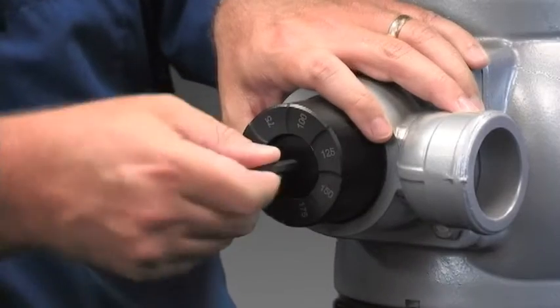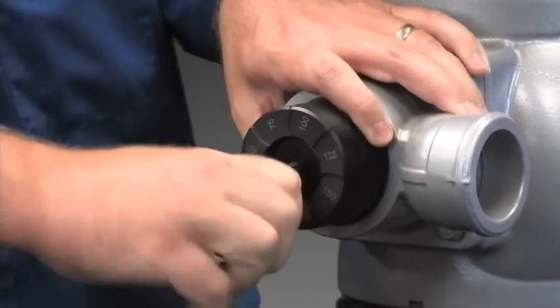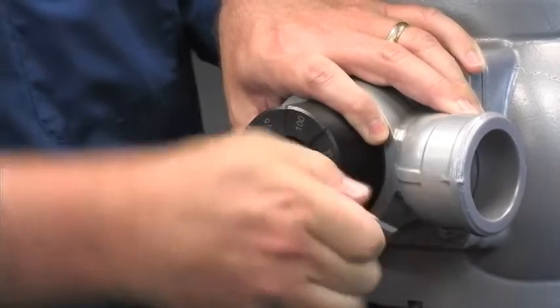All you need to do is take that Allen wrench, slide it into the key that's on the bottom of the pressure relief valve, and turn this center plug.